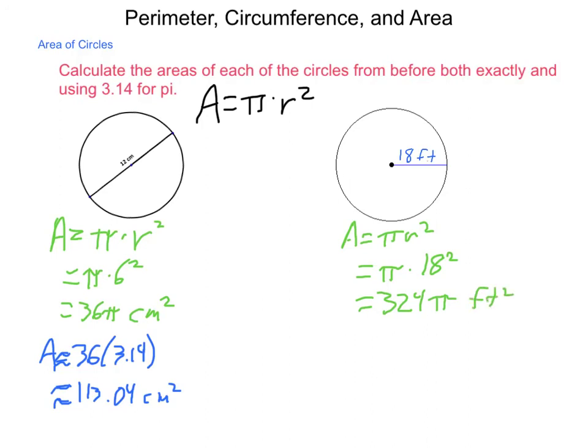Doing the decimal approximation, we would have our area is approximately equal to 324 times 3.14, which that being computed is 1017.36 centimeters squared.